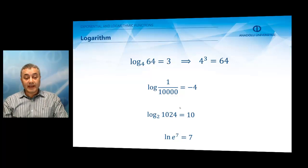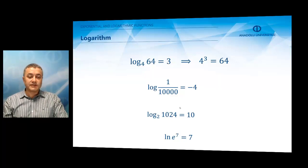Logarithm of 1024 to the base 2 is 10. If you take the ln, not the logarithm, but ln of e⁷, since the base of this special logarithmic function is e, we get the result 7.